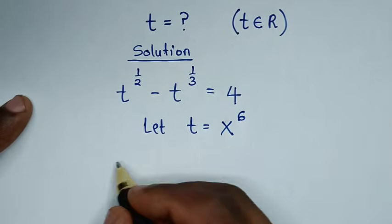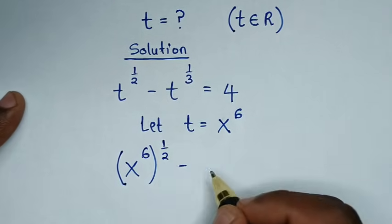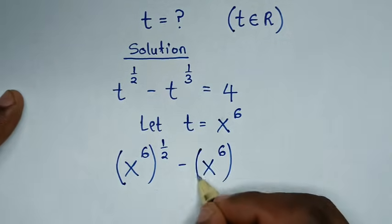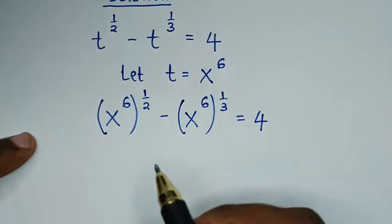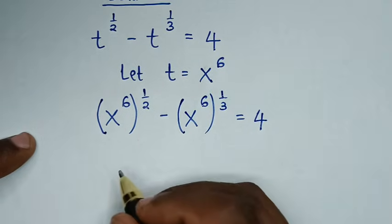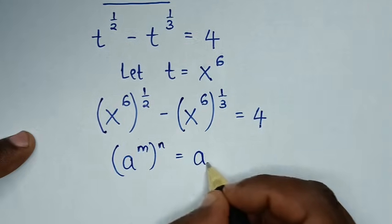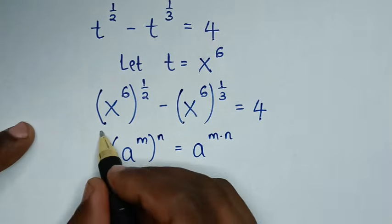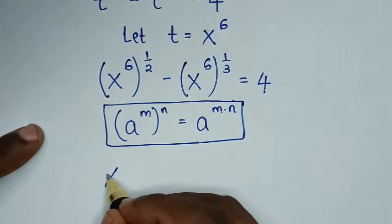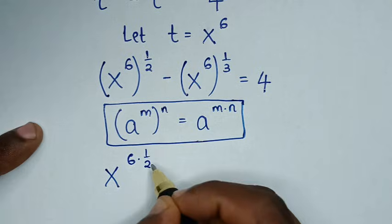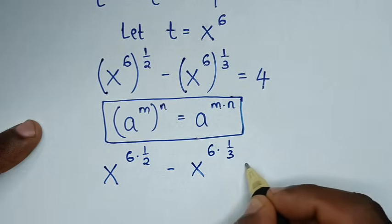We substitute t with x to the power of 6. It becomes x to the power of 6, bracket, to the power of one half, minus x to the power of 6, bracket, to the power of one third, equals 4. From the exponent rule: a to the power of m, bracket, to the power of n equals a to the power of m times n. Applying this: x to the power of 6 times one half, minus x to the power of 6 times one third, equals 4.